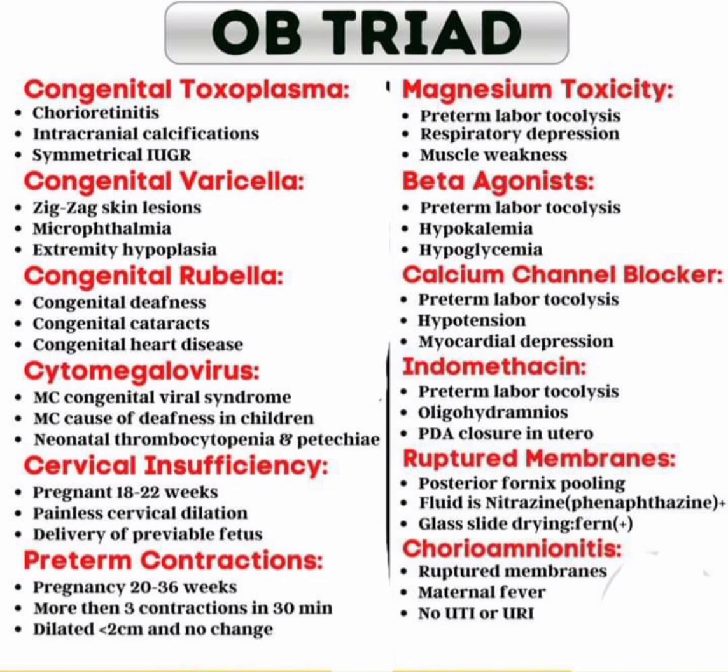Cytomegalovirus triad: it is the most common congenital viral syndrome, the most common cause of deafness in children, and presents with neonatal thrombocytopenia and petechiae. Next, cervical insufficiency: the triad is pregnancy at 18 to 22 weeks, painless cervical dilatation, and delivery of a viable fetus.